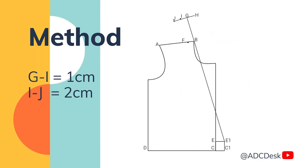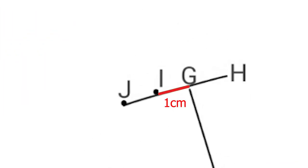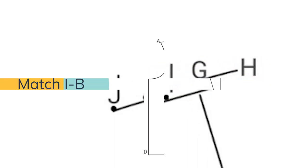Then, opposite to that, mark G to I 1 cm and I to J 2 cm. Now, we will get this J, I, G and H a horizontal slightly tilted line.